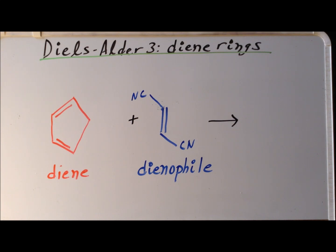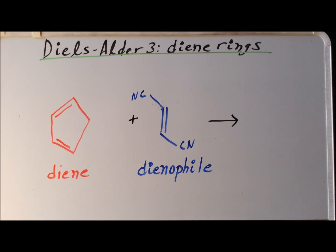For the final reaction in this particular video, we are going to look at, as you might expect, the trans-conformation of 1,2-dicyanoethylene as the dienophile. We will see the computed structures for the diene, dienophile, the transition state structure, and the computed structure of the product.